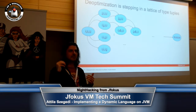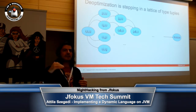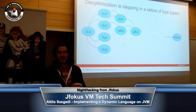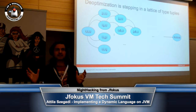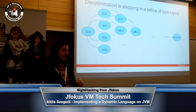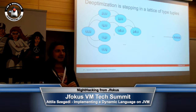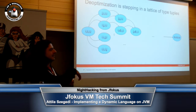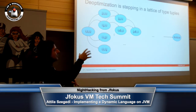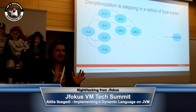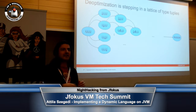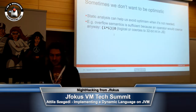If you have your function and you have all the points in it that you start out as ints, then a de-optimization is basically just a stepping in this lattice of type tuples. You start from, 'hey, let's presume every possible unknown type will be an int.' On the other hand, you have the sad, lonely case of — well, everything turned out to be objects. And whenever any of these assumptions are invalidated, you compile a new version. You're basically stepping through this lattice trying to find the version of the code that's the narrowest version through which all your data can still flow.